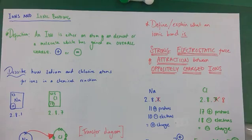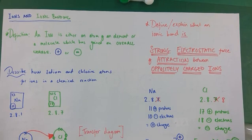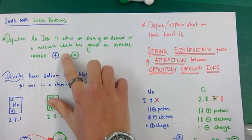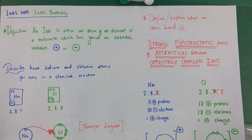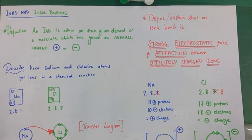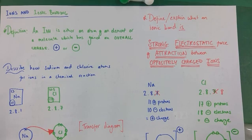This video is going to focus on ions and ionic bonding. Ions are either atoms of particular elements or entire molecules which have somehow gained an overall charge - either positive or negative. The only way that can happen is that there has been a transfer of electrons to or away from that atom or molecule, giving it an overall positive or negative charge because of an imbalance in the number of protons and electrons present.